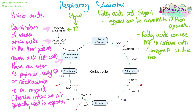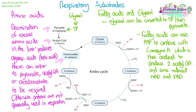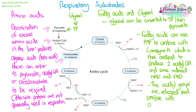Fatty acids can use a molecule of ATP to combine with coenzyme A. This is then oxidized, and this produces two acetyl-CoA and some reduced NAD and FAD. The acetyl groups are released from the coenzyme A and they combine with the oxaloacetate, so they enter the Krebs cycle.